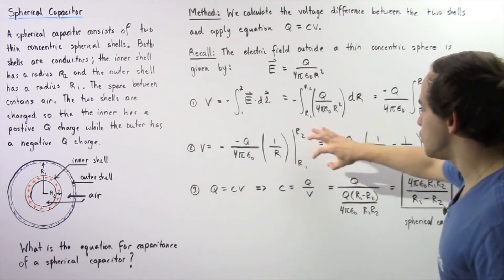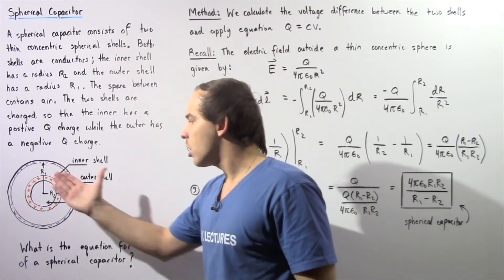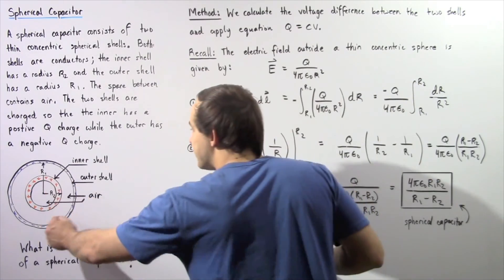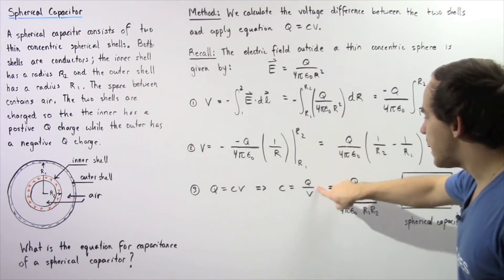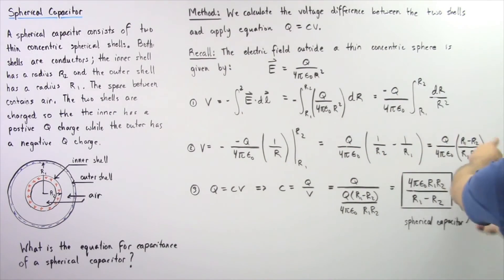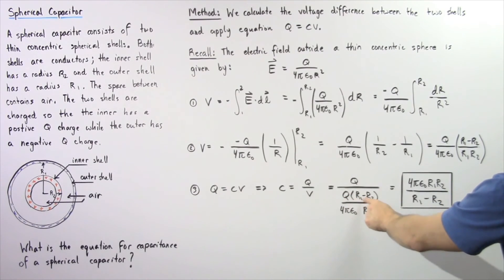Q is the quantity of charge on either shell. We choose the inner shell to be positive. Q divided by V equals Q divided by this entire fraction, so Q divided by Q multiplied by r1 minus r2 divided by 4π epsilon naught r1 r2. The Q's cancel.